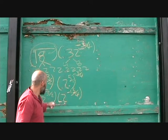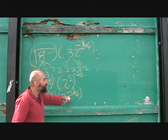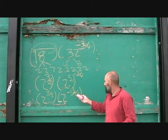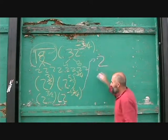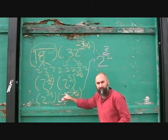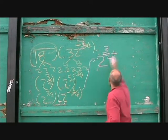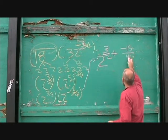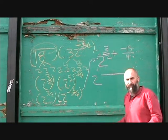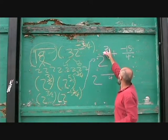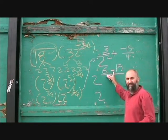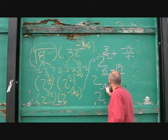Now we have them as the same base, so we can add the exponents. The base is 2, and we add 3 over 2 plus negative 15 over 4. The common denominator for 2 and 4 is 4, so we multiply 3 by 2 to get 6, giving us 6 minus 15. So 6 minus 15 is negative 9, and the result is 2 to the power of negative 9 over 4.